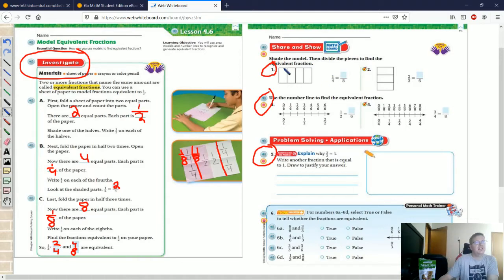So number one, we're going to shade the model. If we fill in one fourth, I am going to draw extra lines here. So if I fill in this part, I am going to have a total of two parts filled in. That's going to give us two eighths.